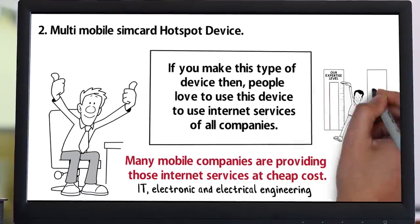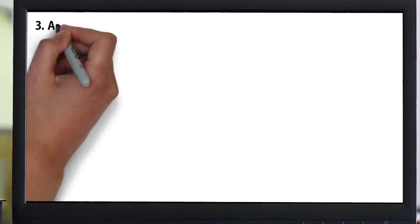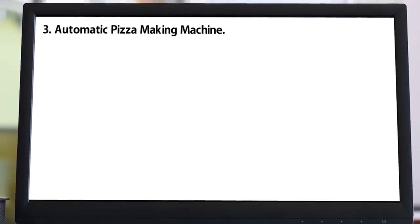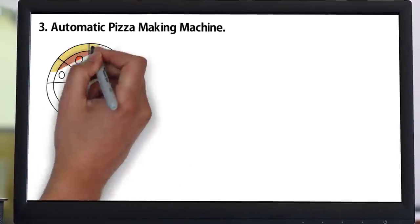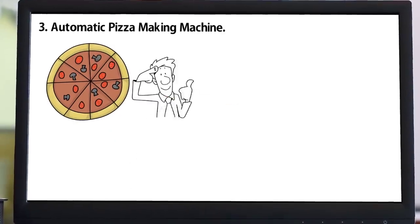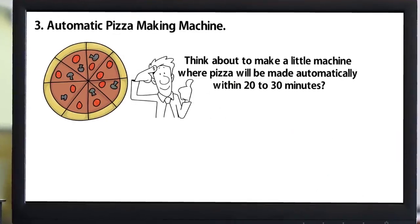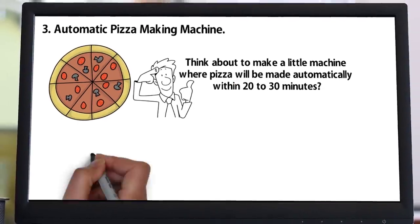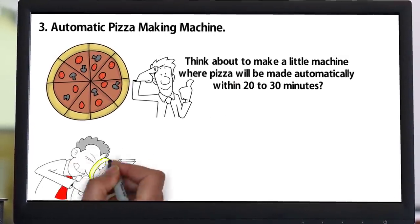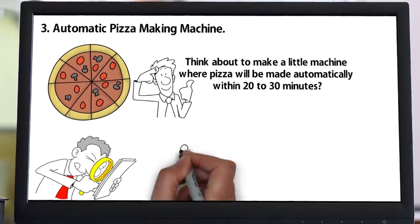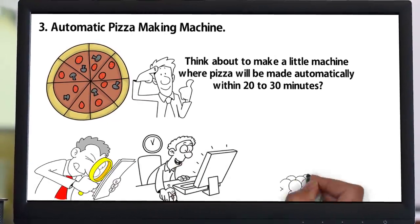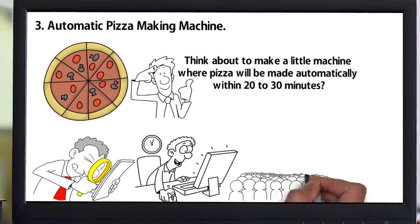Number three: Automatic pizza making machine. Pizza is an all-time favorite fast food that every person wants to eat. Think about making a little machine where pizza will be made automatically within 20 to 30 minutes. Research it on the internet and go for making this type of device. If you make an affordable pizza making machine, billions of people are ready to buy it from you.